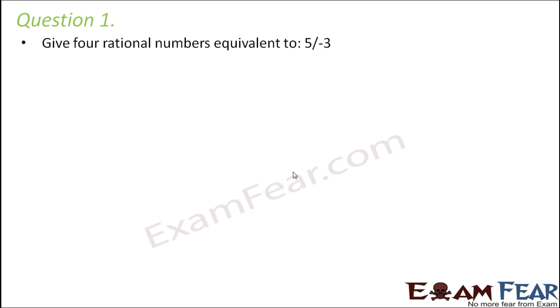So what is the number that is given to us? 5 divided by minus 3. Now, what is the process that we follow to get equivalent rational numbers? The simple thing that we do is we multiply the numerator and the denominator with the same number, so that the overall value remains unchanged, but at the same time we get a different rational number.